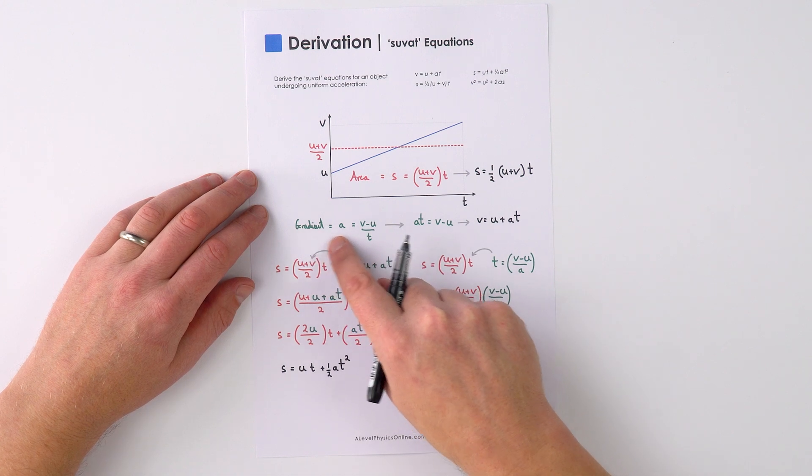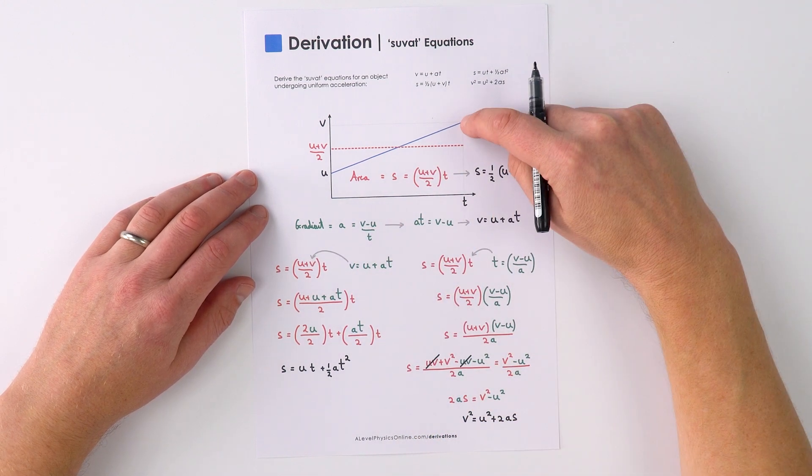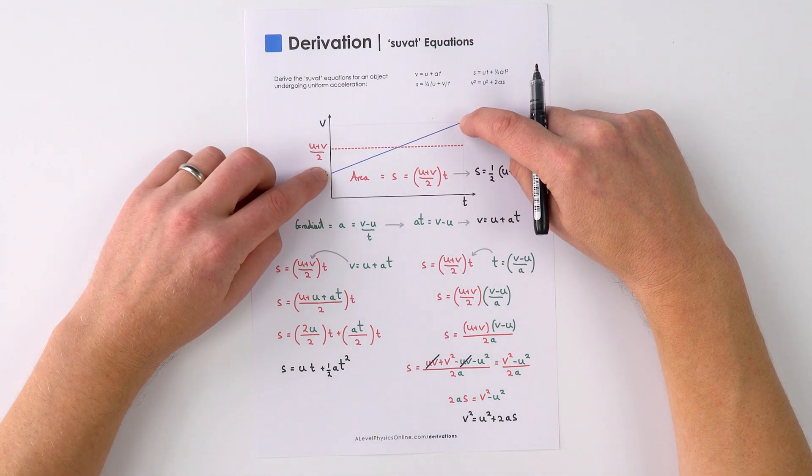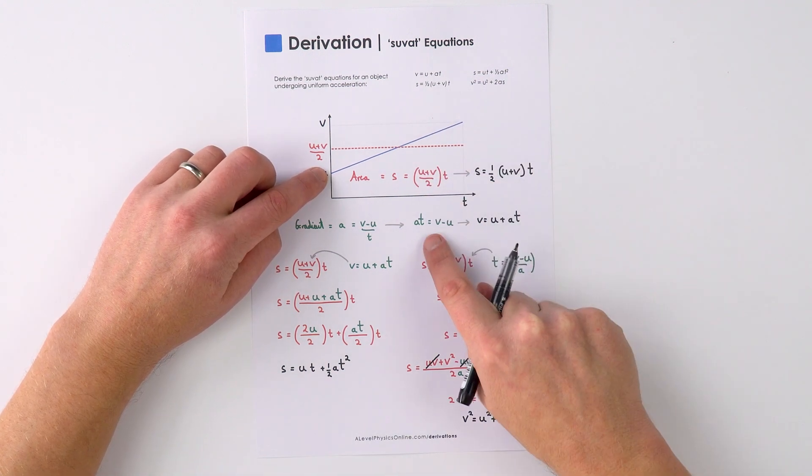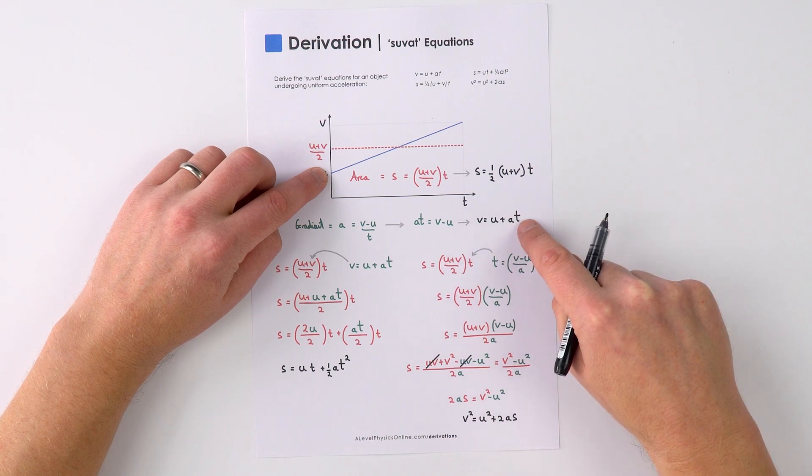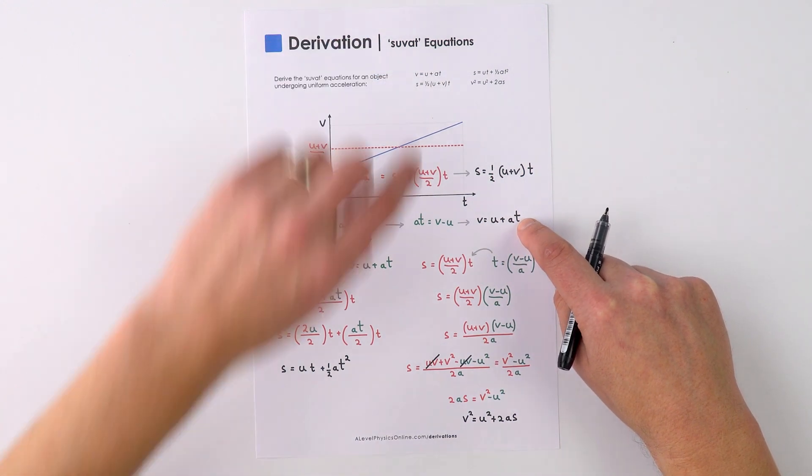The second one: the gradient is equal to the acceleration on a velocity time graph. That's equal to v minus u divided by t, and we can rearrange this to say that v is equal to u plus at. So that's our second equation.